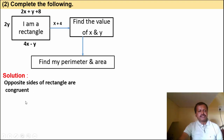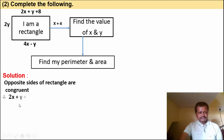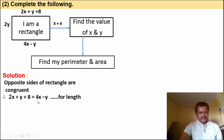So 2x plus y plus 8 is one side and the opposite side is 4x minus y. These two sides are equal. So we write: 2x plus y plus 8 is equal to 4x minus y. This is for the length.